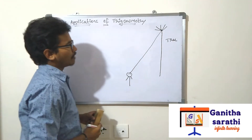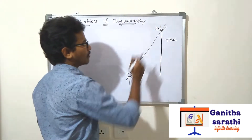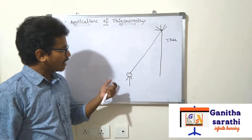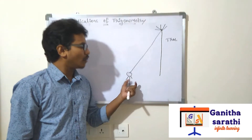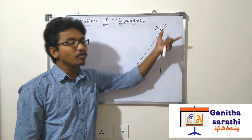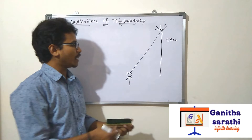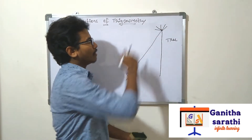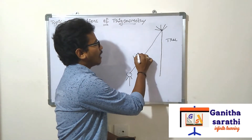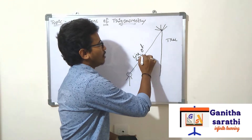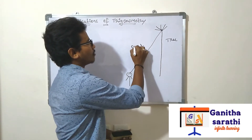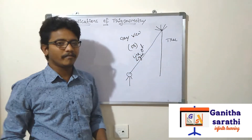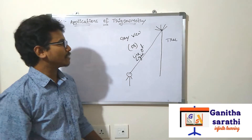Listen carefully. The imaginary line drawn from the observer's eye to the point where the observer is seeing — that line is called as line of sight, or it is called as ray of view.